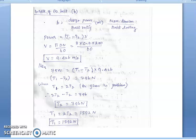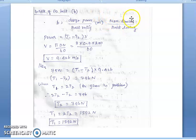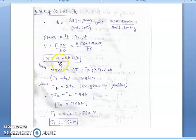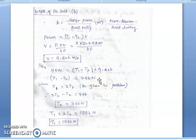Instead of the data book, we solve using fundamental equations. Belt width = design power / belt rating. Power transmitted = (T1 − T2) × V, and V = π·D·N / 60 = 9.426 m/s. From P = 7.5 kW = (T1 − T2) × V, we find T1 − T2. Using T1 = 2·T2, we substitute to find T2 = 796 N.